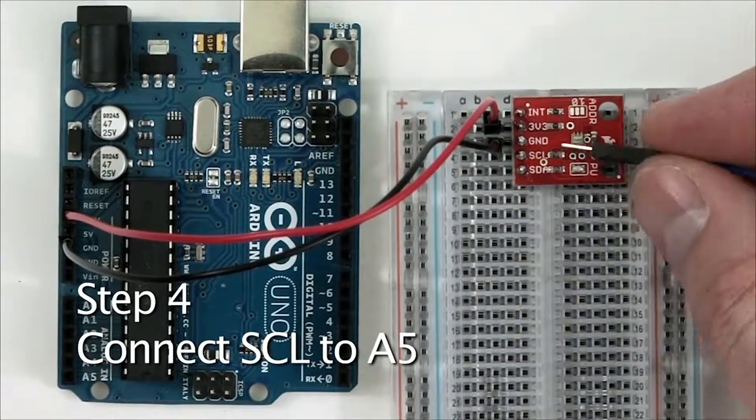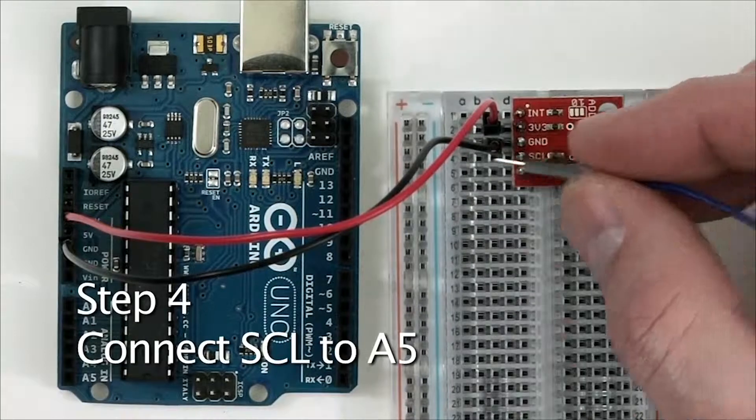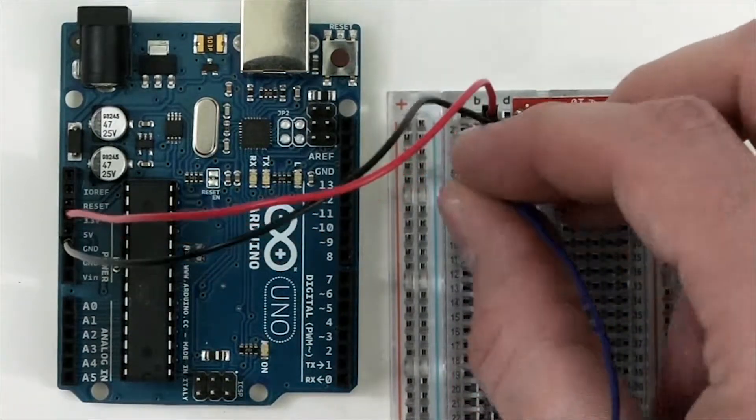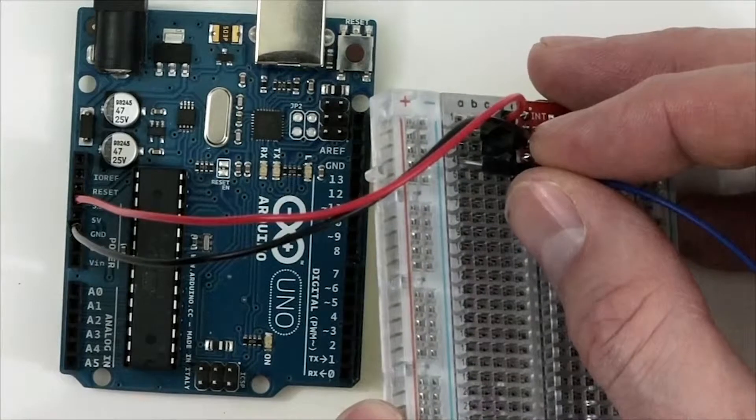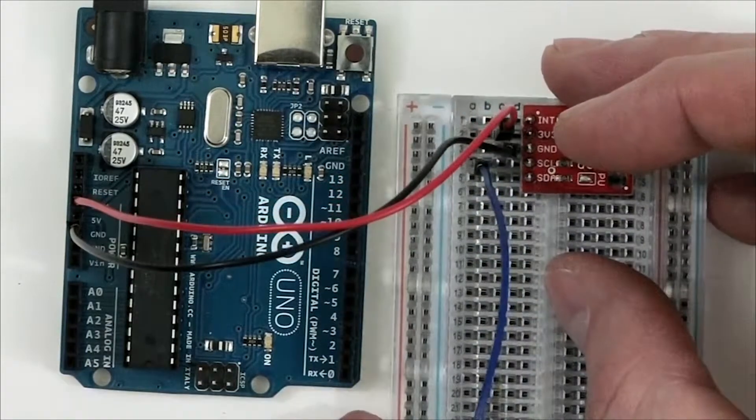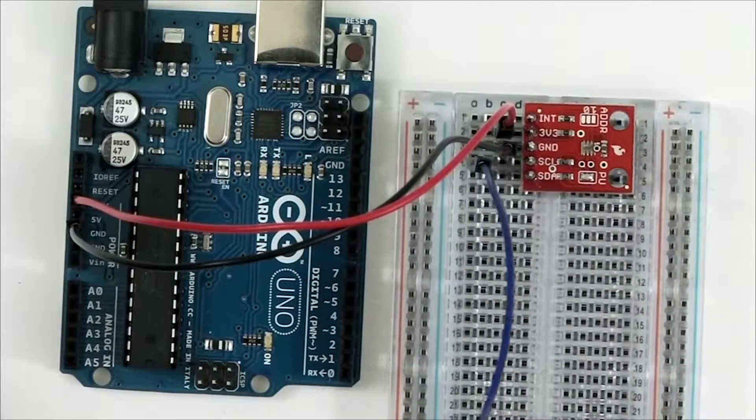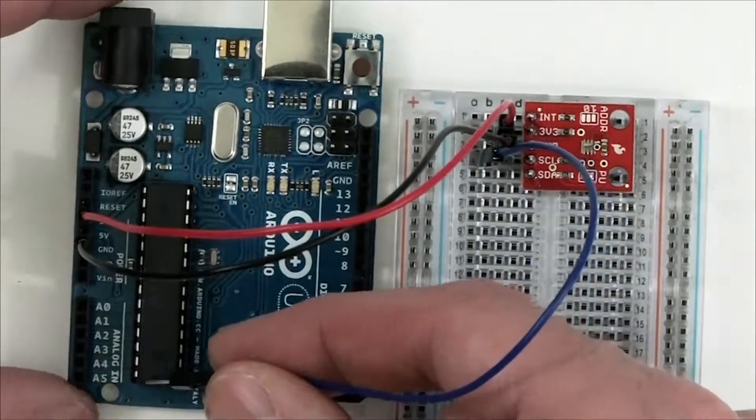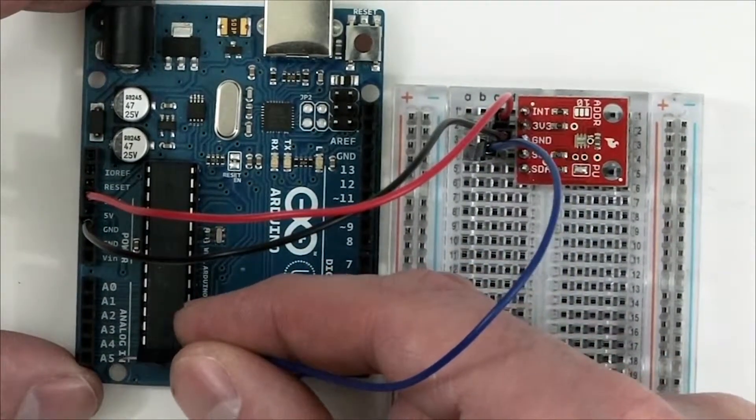Next, we're going to hook up the SEL pin by plugging one end of a jumper wire into row number four, and taking the other end of the jumper wire and plugging it into analog five or A5 on the Arduino.